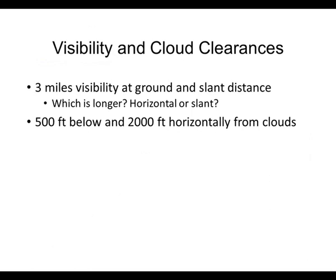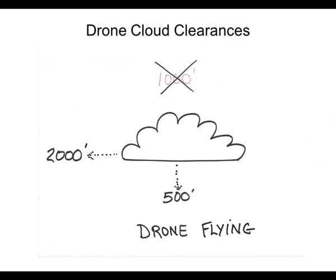We have our old standard cloud clearance, except one is missing — and you all answered that correctly. What's missing is the 1,000 feet above the cloud. So here are the cloud clearance requirements: you have the slant distance of 3 miles, and you have the cloud clearance requirements of 500 feet below and 2,000 feet horizontally.